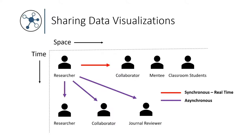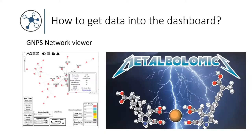Each visualization basically generates a very long and unique URL that you can easily share with your peers — just email it, put it in a Google Doc, convert it to a QR code, or include it in your paper. People can then paste this into their web browser and open the particular visualization you had in front of you. Because it's all happening in the cloud, we can also do real-time updates via a synchronous real-time visualization link. You generate it for each session, share it with peers, and if you change settings in the dashboard it automatically updates for all viewers — it's kind of like Google Docs for mass spec data visualization.